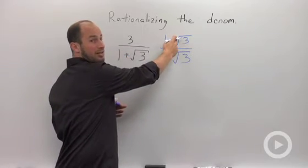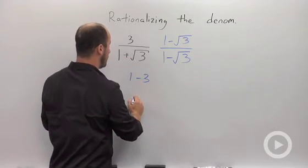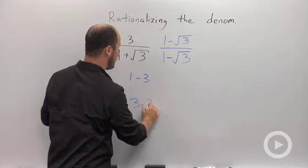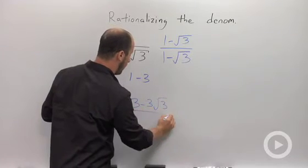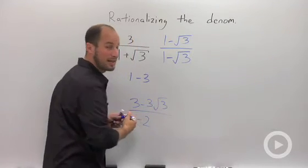We still have to distribute this through in the numerator so we end up with 3 minus 3 root 3 all over negative 2.